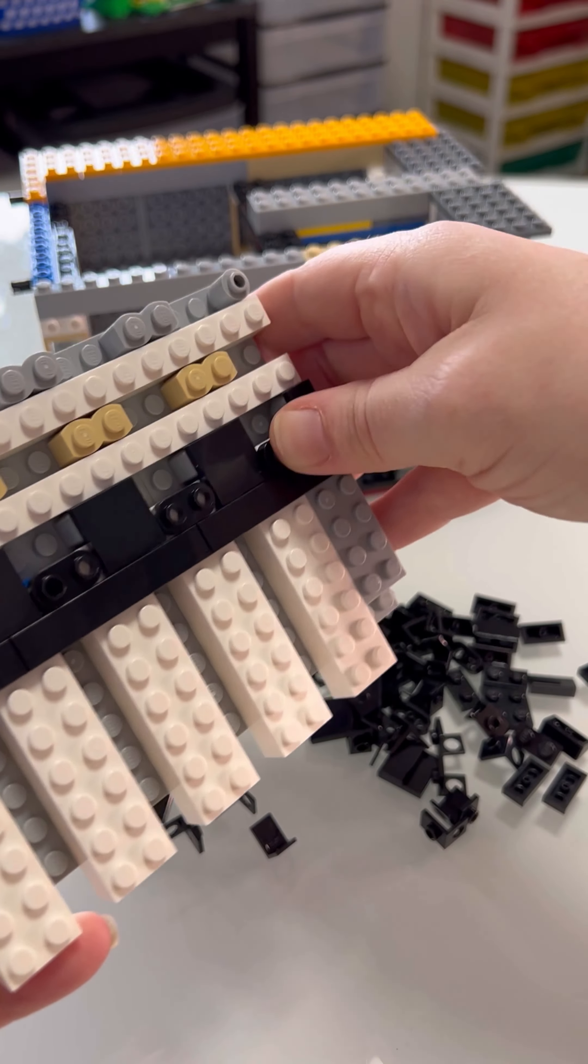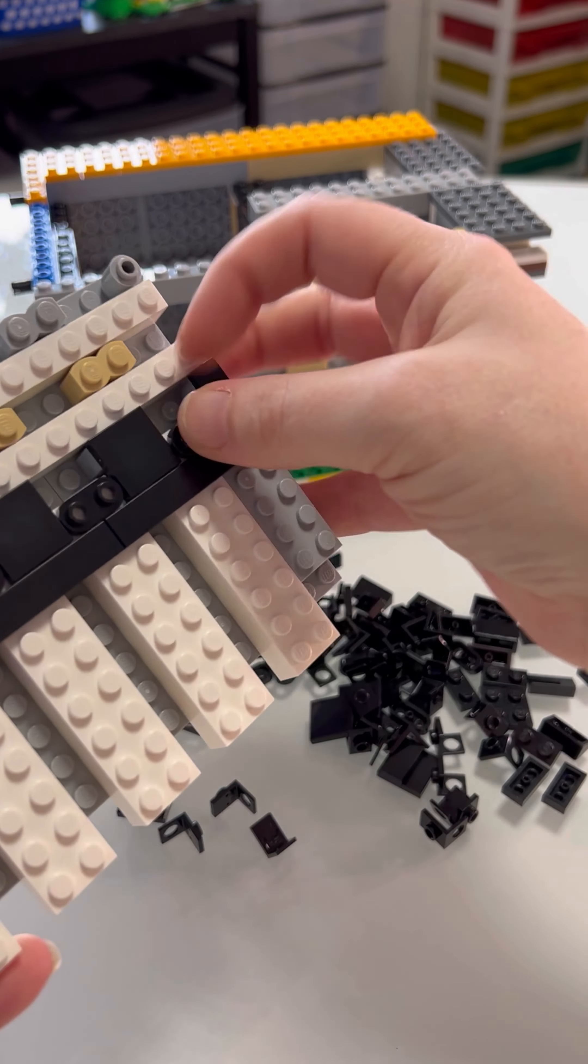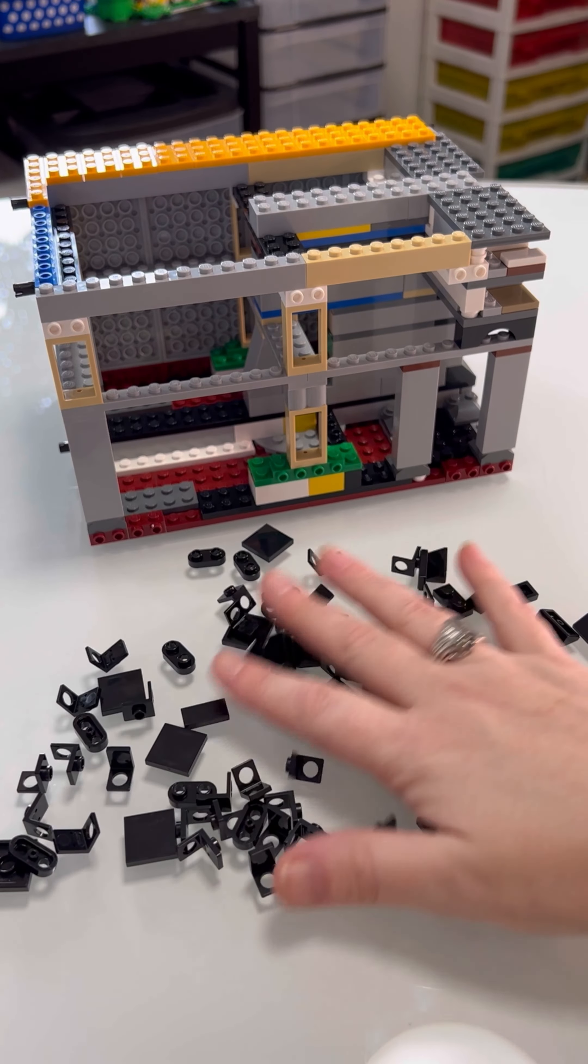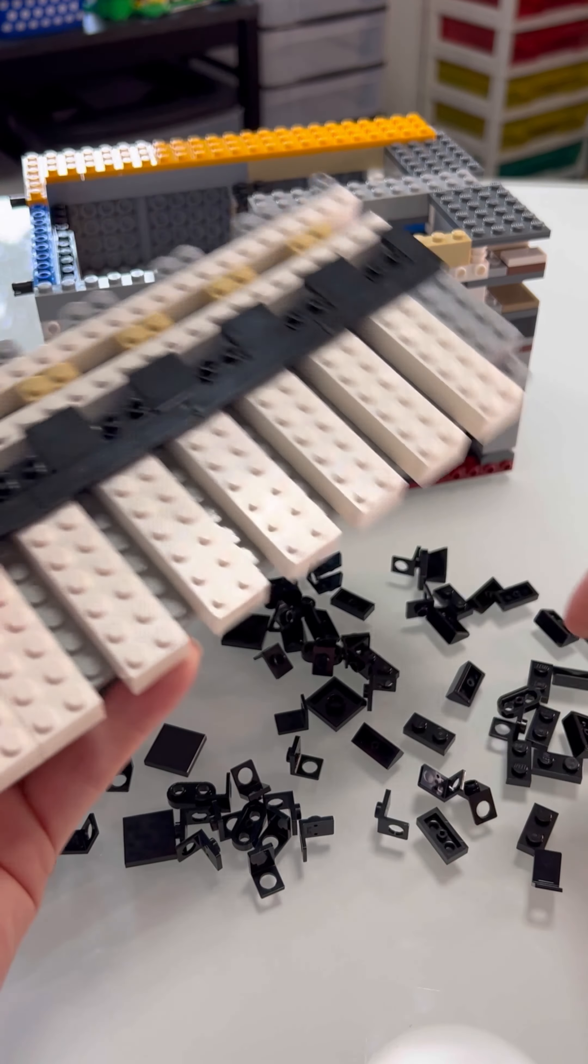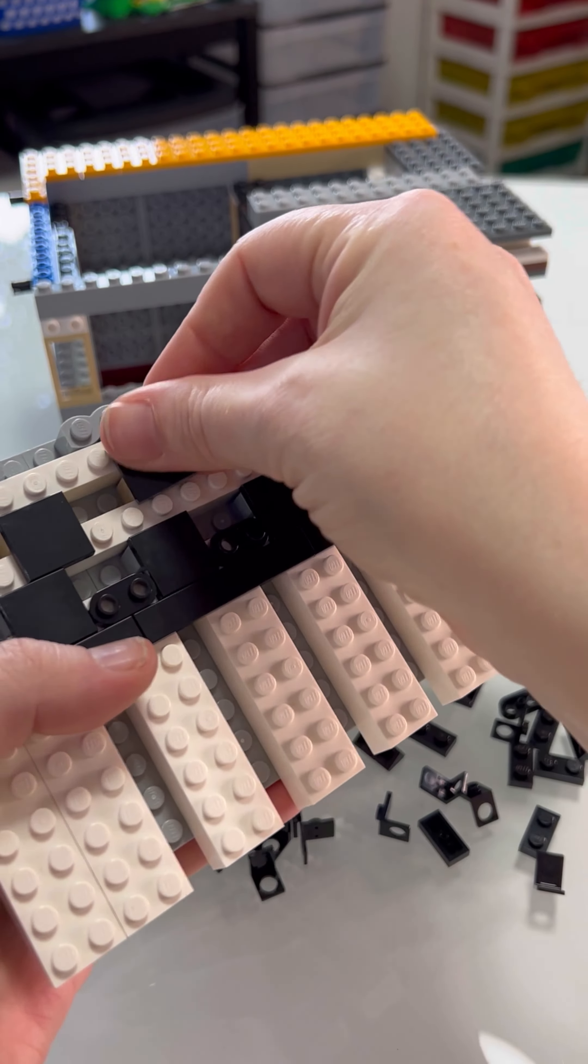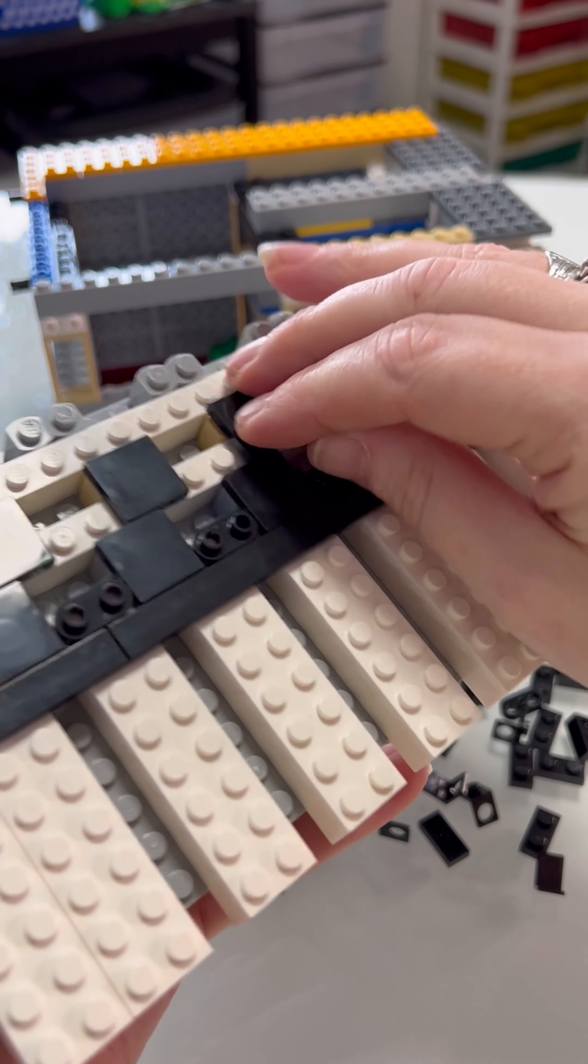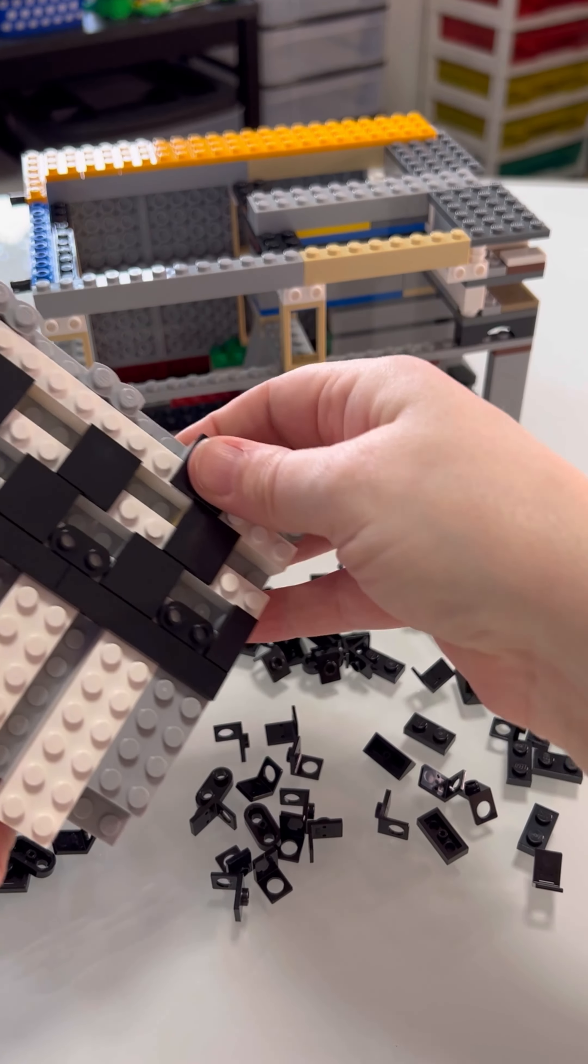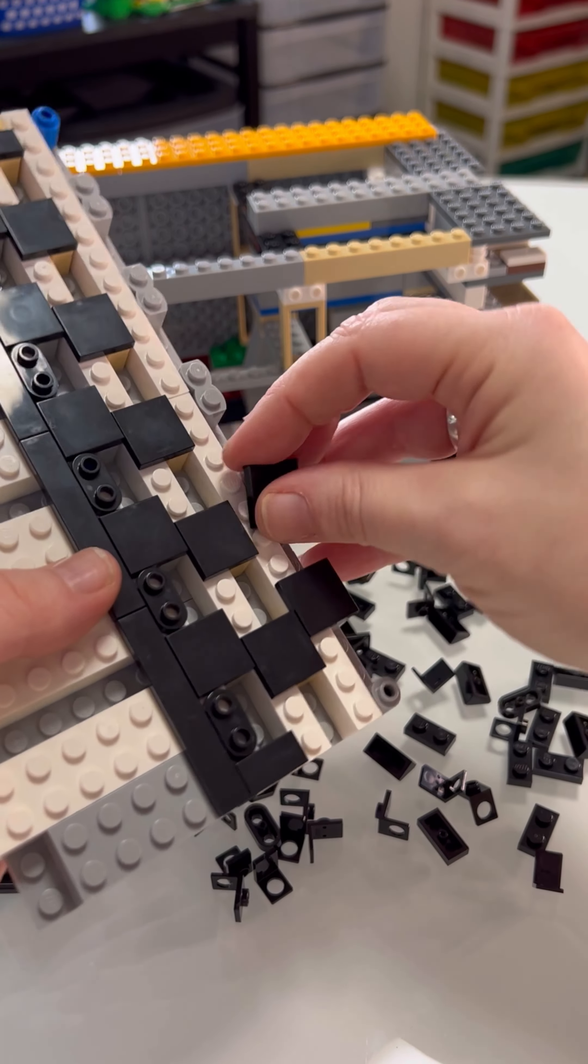We've got this giant pile of black pieces. And the worst part is sifting through the pieces to find what you need. And we need one of these. Right there. Ovals.